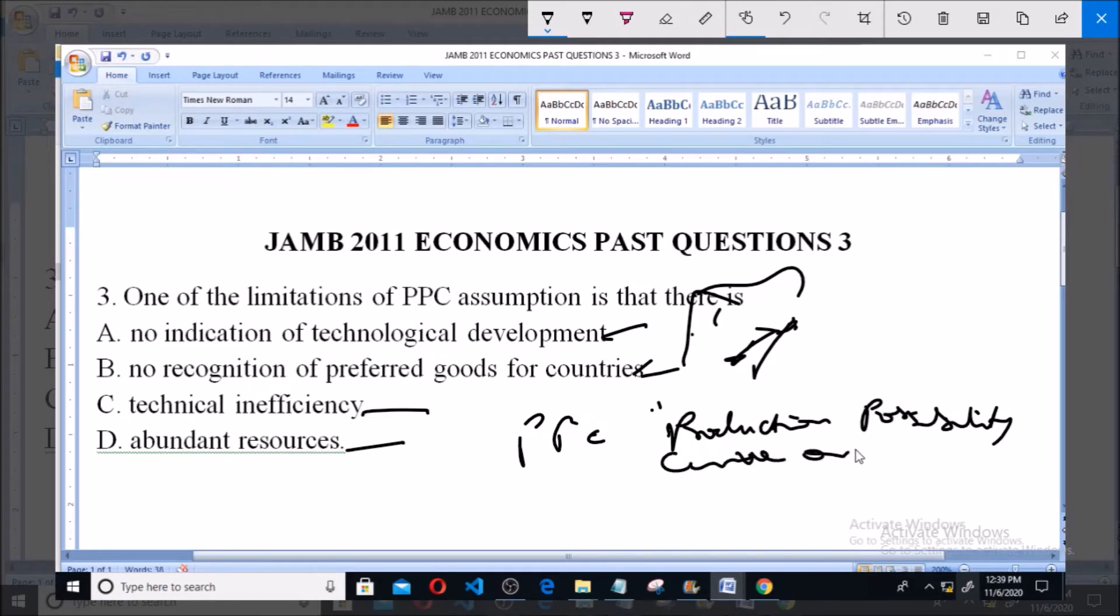Or called production possibility boundaries. So one of the assumptions of the PPC is that...